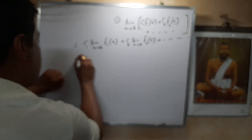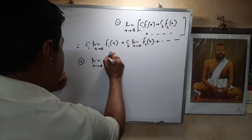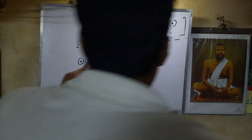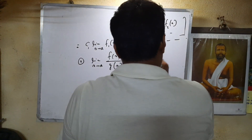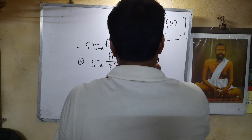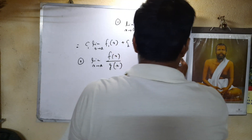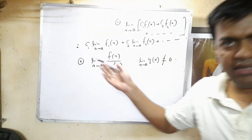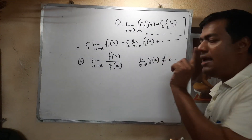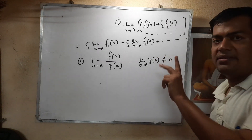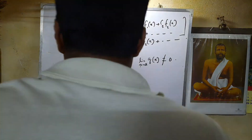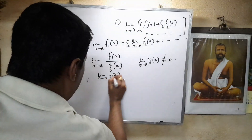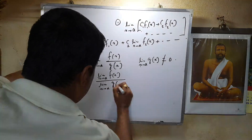Similarly, limit x tending to a of f(x)/g(x) — provided that the limit x tending to a of g(x) is not equal to 0 — equals [limit x→a f(x)] divided by [limit x→a g(x)].